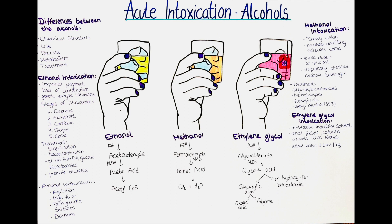The metabolism of ethanol occurs in several steps and includes different enzymes. The first step is the oxidation of ethanol to acetaldehyde by the enzyme alcohol dehydrogenase (ADH). Acetaldehyde is a toxic substance that can cause unpleasant symptoms such as facial flushing, nausea and headaches. The next step is the conversion of acetaldehyde to acetic acid by the enzyme acetaldehyde dehydrogenase (ALDH). Acetic acid is then converted to carbon dioxide and water, which can be excreted from the body.